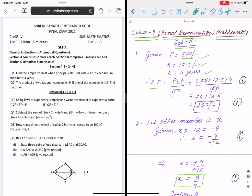Write the formula first, put the value 500 into 12.5 into 4 by 100. If you cancel 100 and 500, it is 5, then 20 into 12.5, answer is 250 rupees. Always write answer in rectangular box and unit must be mentioned.